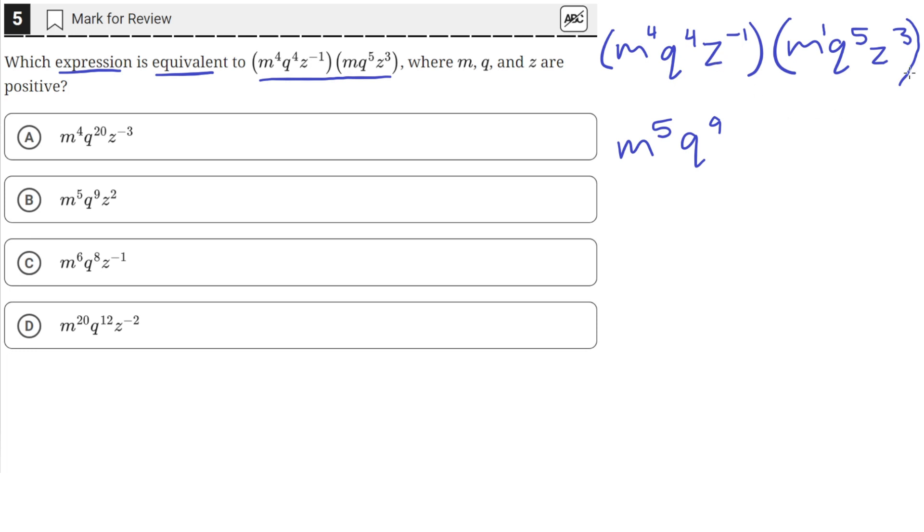Then we have z to the negative 1 and z cubed here. We'll keep the base the same and add the exponents. So negative 1 plus 3 equals 2.